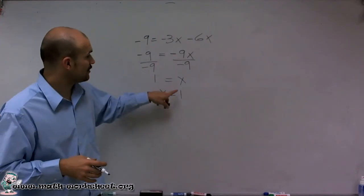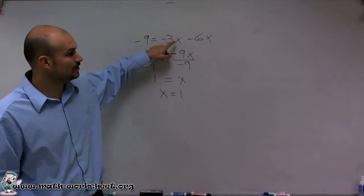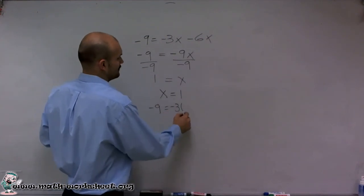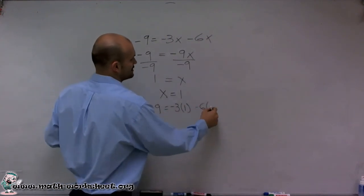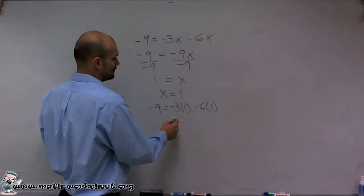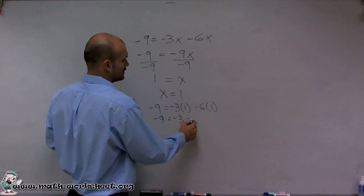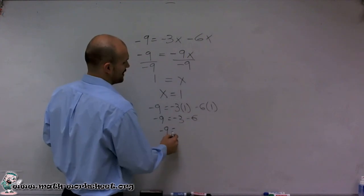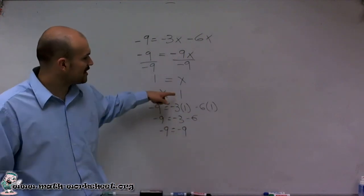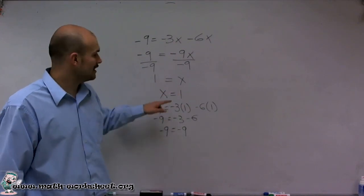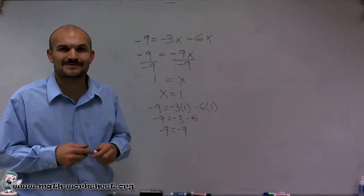We can always plug back our answer into the original equation to see if it works. Negative 9 equals negative 3 times 1 minus 6 times 1. Negative 3 times 1 equals negative 3, negative 6 times 1 is negative 6. Therefore, negative 9 equals negative 9. Since plugging in the value of x equals 1 makes the equation true, I can confirm this is the correct solution.